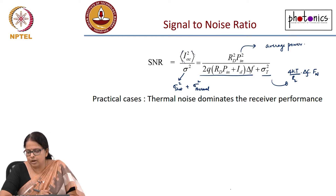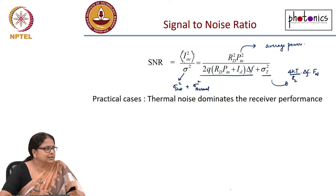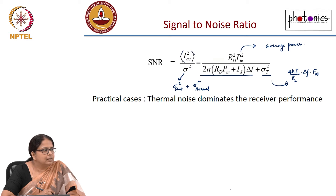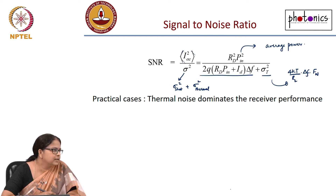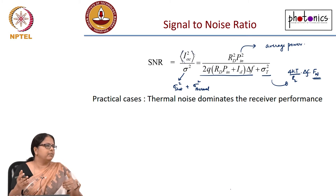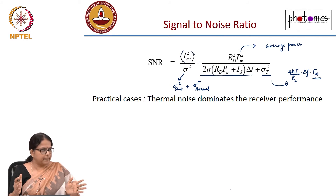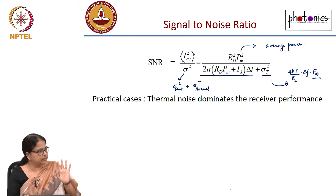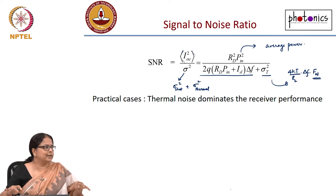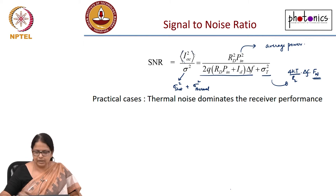Before that, let us talk about how to reduce thermal noise. You can reduce the temperature. You can increase the load resistance — that is a very practical way. If you have an amplifier in the path, reduce the noise figure of those amplifiers. You should use optimal bandwidth, since you cannot reduce bandwidth beyond what is needed to detect your signal. Also, reduce temperature if possible, or use a thermoelectric cooler (TEC) to prevent the circuit from heating up.